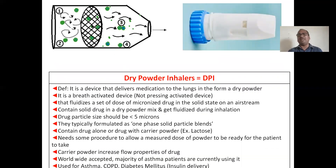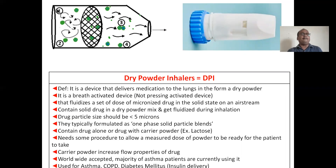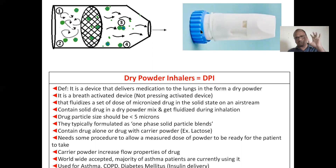Dry powder inhalers are very simple — a simple plastic device. Looking at the real picture: the back side consists of powder. There is a mesh that filters larger particles. Here is the inhalation end. Simply, you keep the powder at the back side — you open it and place the powder or the capsule. Whatever form is provided, whether powder directly or in a capsule, you place it in the device and inhale from this side. There is no actuation of the device.